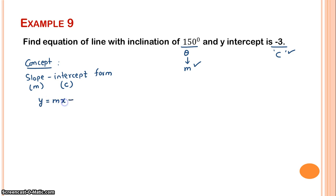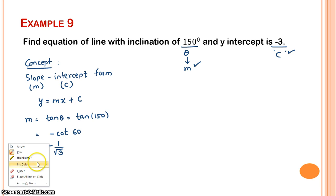First find the slope: m = tan θ = tan(150°) = -cot(60°) = -1/√3. Now using y = mx + C: y = (-1/√3)x + (-3), so y = (-1/√3)x - 3.